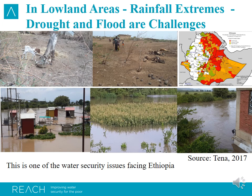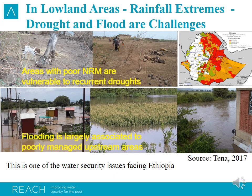The previous challenges are in the highland areas. In the lowland areas, rainfall extremes — drought and flood — are a major challenge. Areas with poor natural resource management are vulnerable to recurrent drought. The flooding is largely associated with poorly managed upstream areas. The same areas can be affected by recurrent drought at times and by flood at other times.